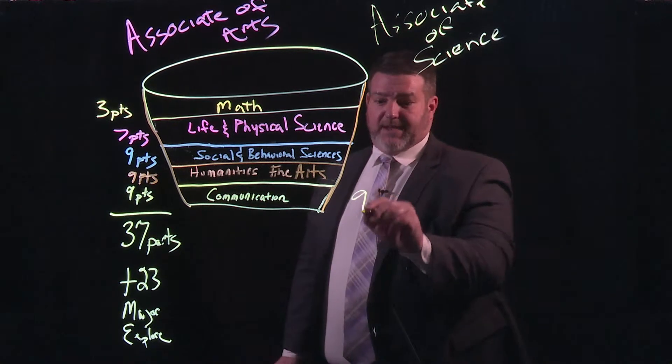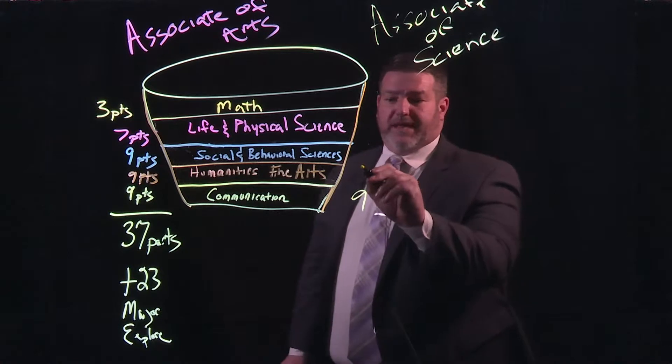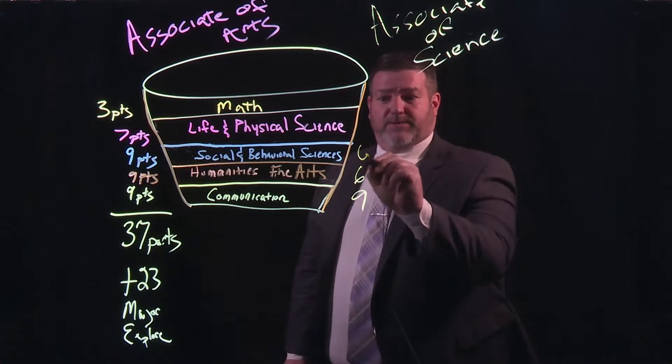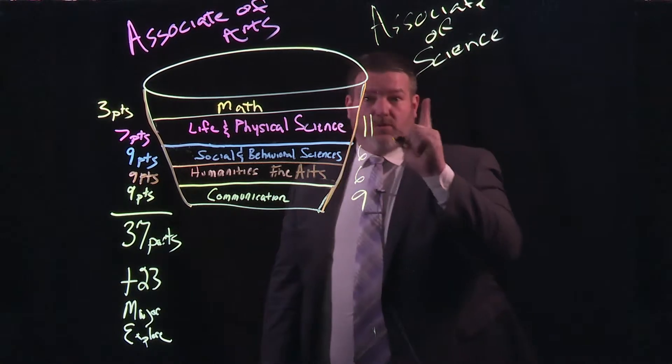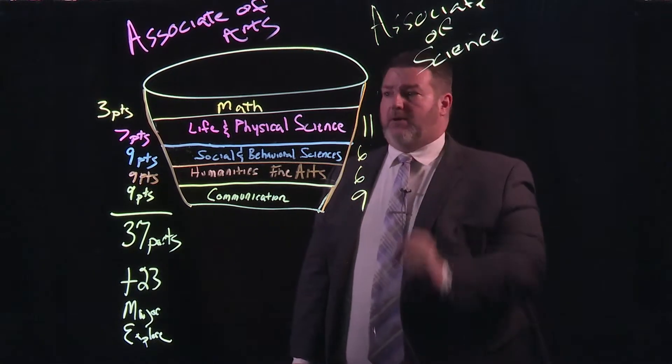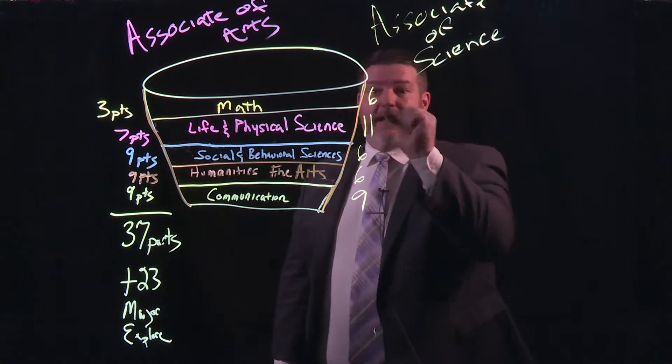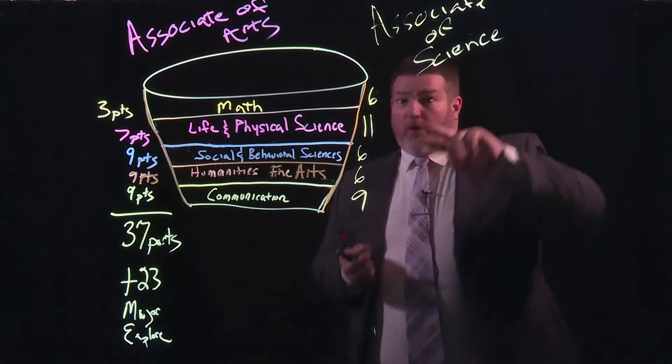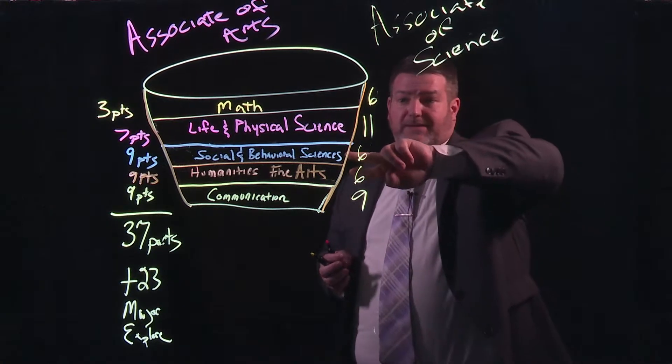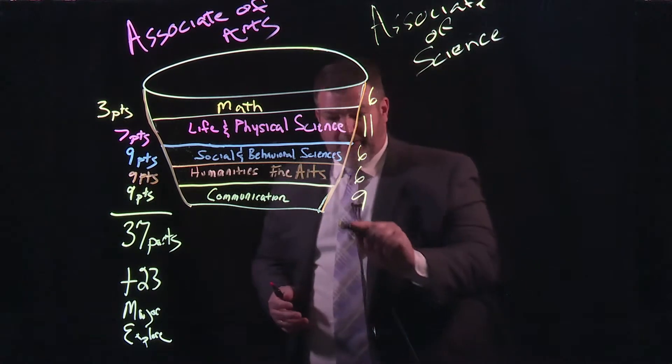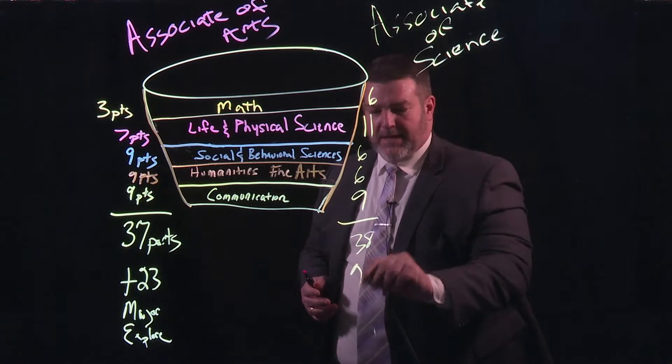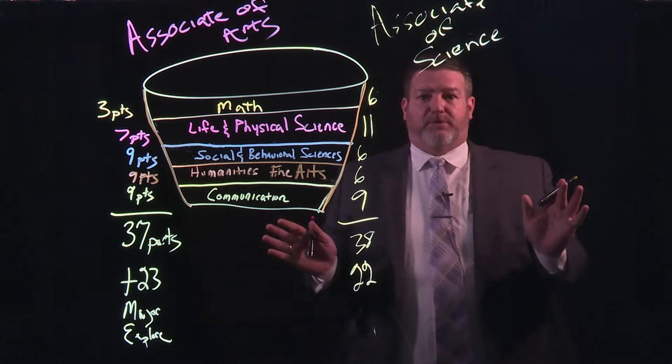Communication stays the same. Humanities and Fine Arts, we take one class off. Social and Behavior Sciences, we take one class off. Life and Physical Science, we add one lab science, four credit hour course, and in math, we add one class. So the whole difference here is we switch two classes out of this dry ingredient, we flip it up there to two classes. They still have, this adds up to 38 hours now because of that lab science, they still have 22 hours of exploration.